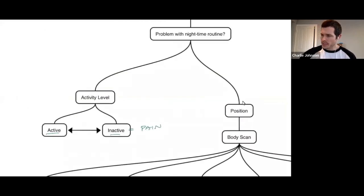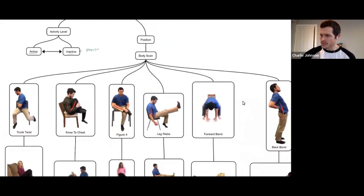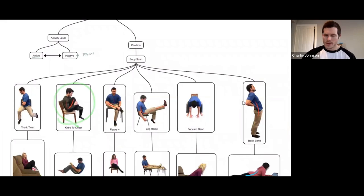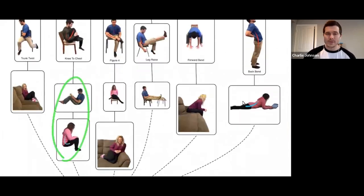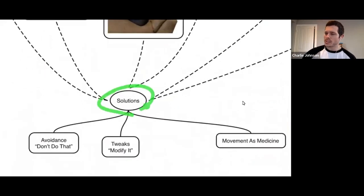Then ask yourself, how is that thing showing up? I gave you a couple of examples of how it shows up in your nighttime routine. Once you've identified those things, we have now solutions. What do we do about it? Well, there are extremes. So on one end, you could just avoid that.